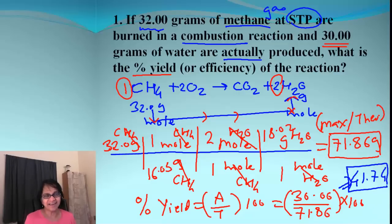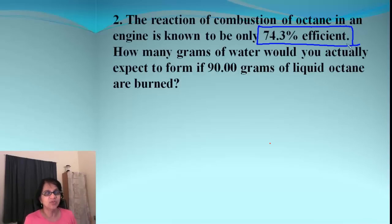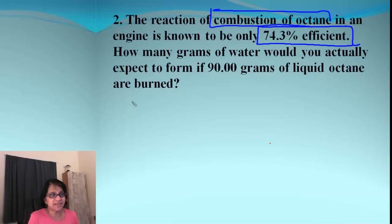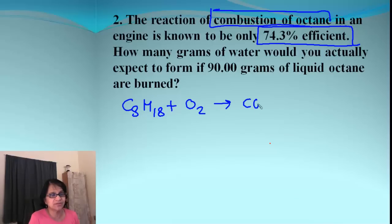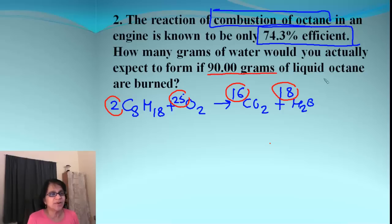Let's do one more problem — this one is a little different and tricky. We are told the reaction is only 74.3% efficient, which is realistic since we never get 100% yield. The reaction is combustion of octane: C₈H₁₈ with O₂ giving CO₂ and H₂O. After balancing, the coefficients are: 16 CO₂ and 18 H₂O.